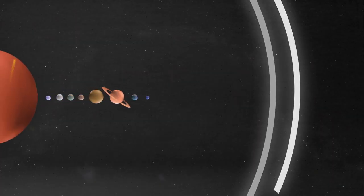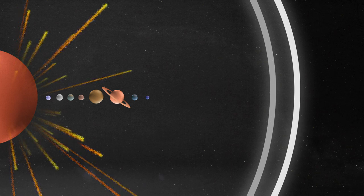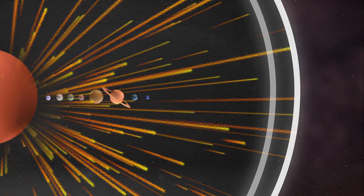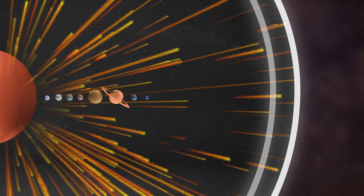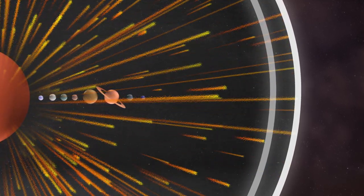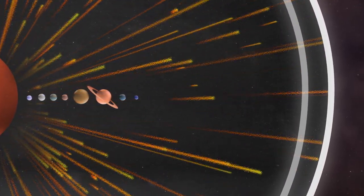Around 11 billion miles from Earth, far past the planets, solar wind pushes against interstellar space. Scientists have been monitoring this boundary over the past decade and they're seeing it change with the sun's activity.